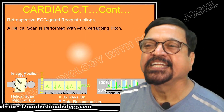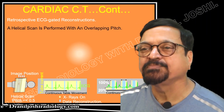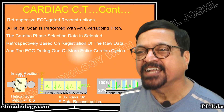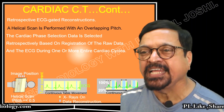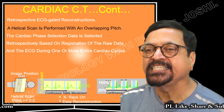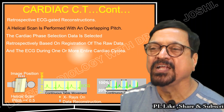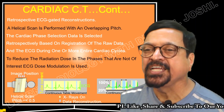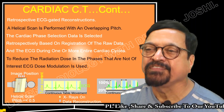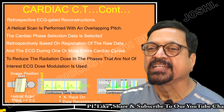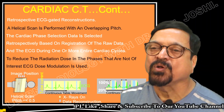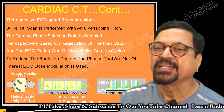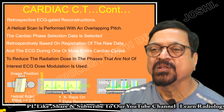In retrospective ECG-gated reconstruction, a helical scan is performed with overlapping pitch. The cardiac phase selected data is chosen retrospectively based on registration of raw data and ECG during the entire cardiac cycle. To reduce radiation dose in phases that are not required or not of interest, ECG-based dose modulation is used — specifically the low-dose module.